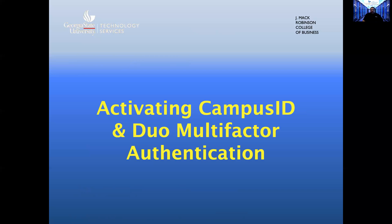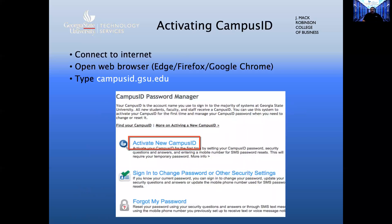Activate your campus ID and dual multi-factor authentication. The first thing you would want to do, if you have not already done so, is activate your campus ID. You should have already received this information before now. A campus ID is usually comprised of the first initial of your first name and your last name, along with some number at the end.